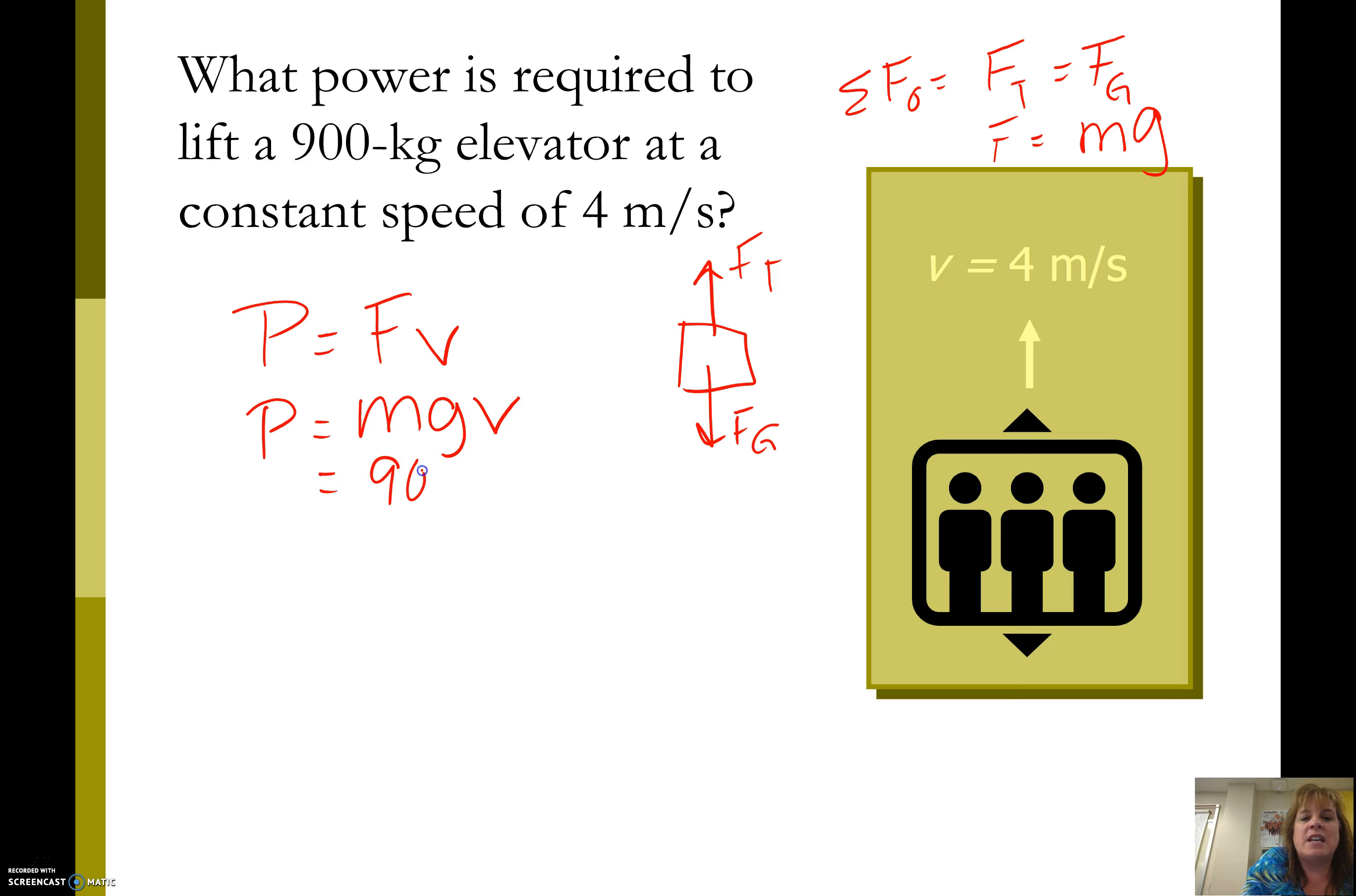We're going to take 900, multiply by 9.8, and multiply that by 4. So if you do that, you're going to get a pretty big number. It's 35,300 watts. Watts are kind of small, so usually we talk in terms of kilowatts. So we could call that 35.3 kilowatts.